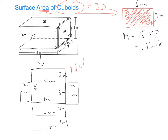This is what we call a net — a net of a 3D shape basically just shows us the 2D shapes that make up the 3D shape. Now we need to find the area of each of those rectangles and then add them all up to get our surface area. Some of you will have spotted that opposite rectangles are the same, so we need to find the area of 3 different rectangles, multiply each by 2, and then add them together.